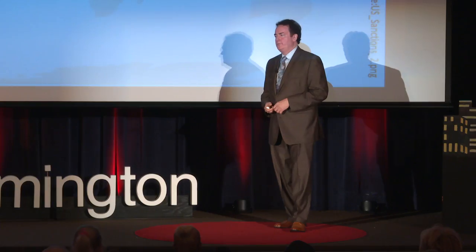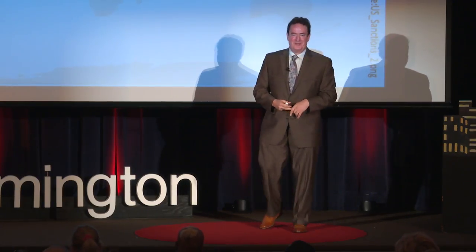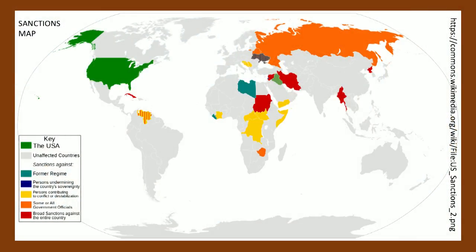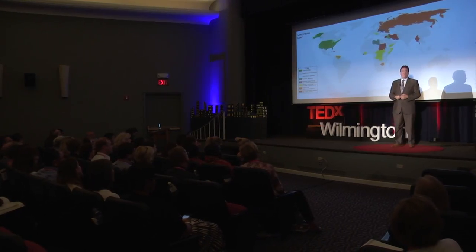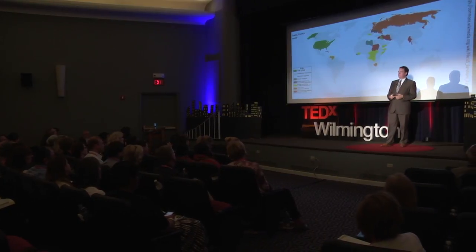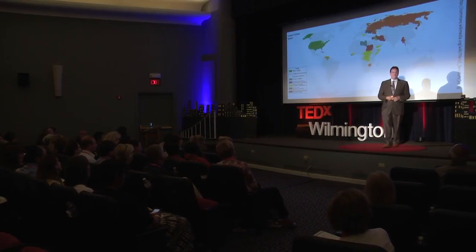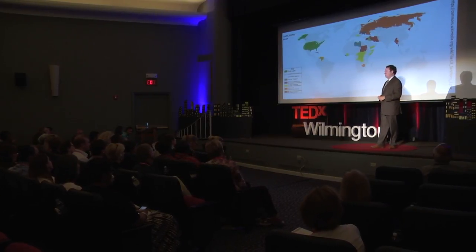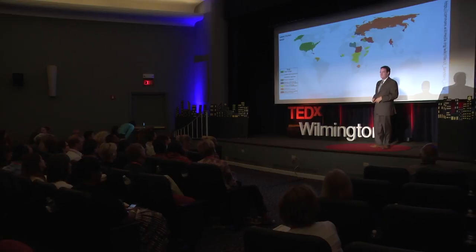You might be wondering what form these economic sanctions take. There are actually two chief forms. One is through embargoes — for our folks from Kenya, you're probably familiar with your neighbor Sudan, who have been in and out of embargo status. Typically an embargo means a total trading block imposed against an entire country, represented here in red. The other form is more rifle-style targeted sanctions in the form of blacklist designations.